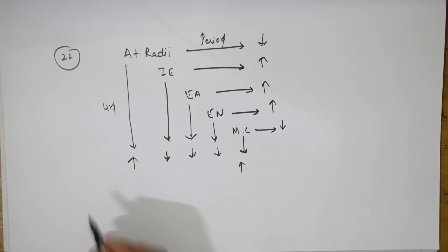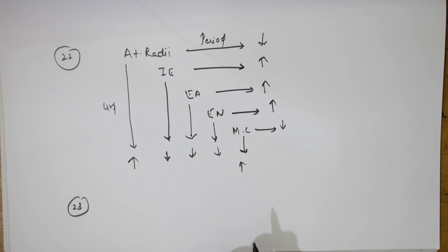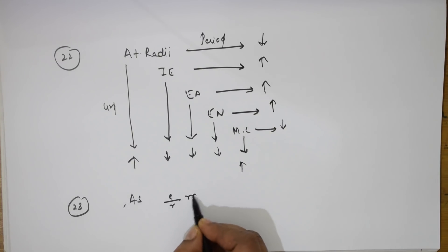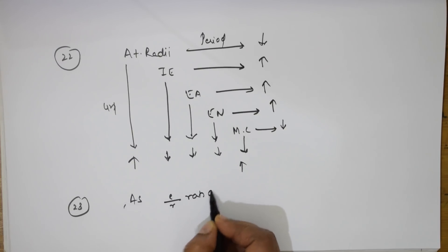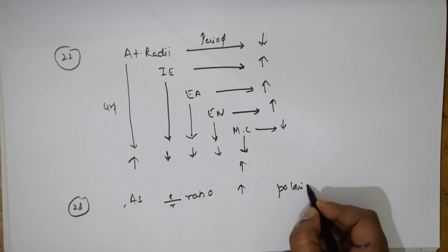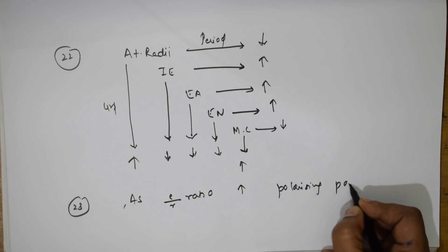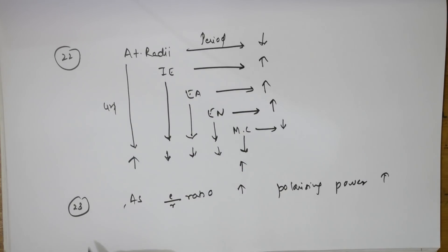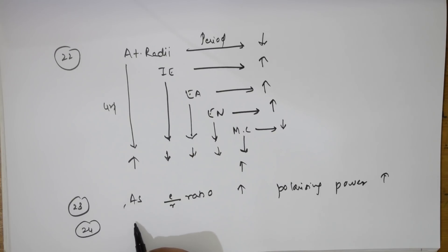The 23rd trick: as the e/r ratio (charge to radius ratio) increases, polarizing power increases. Remember this — it's a very important concept.